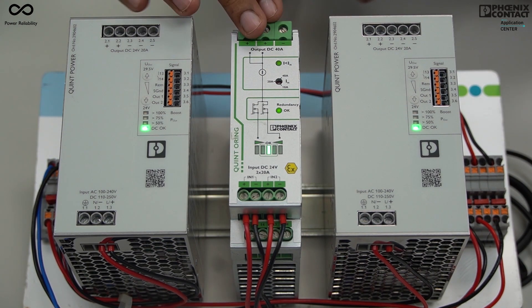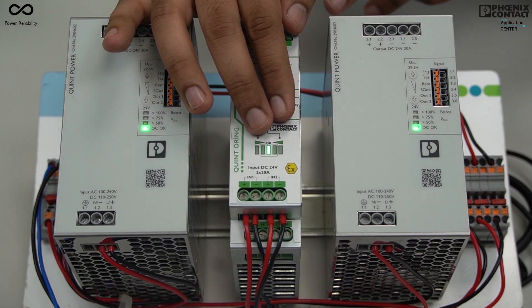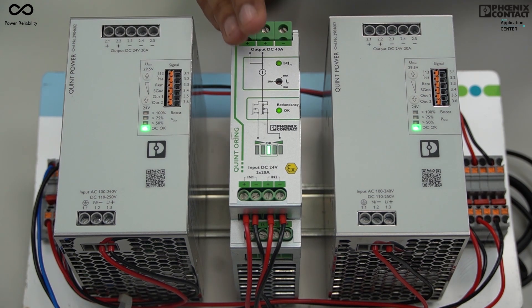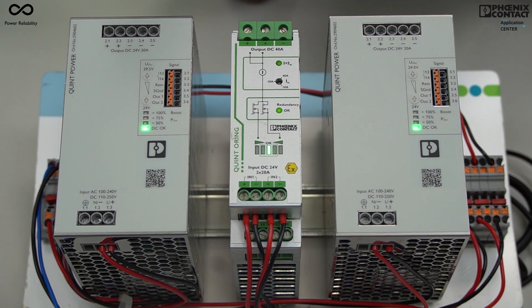In this redundancy module we have a visual bar graph indication which gives you information whether your system is working in healthy mode or not.